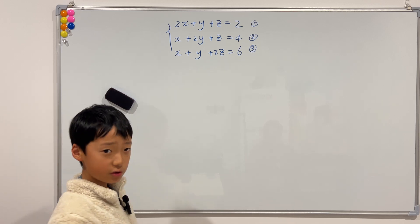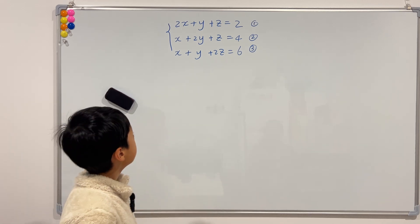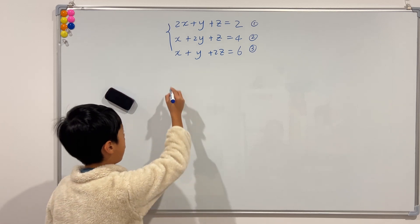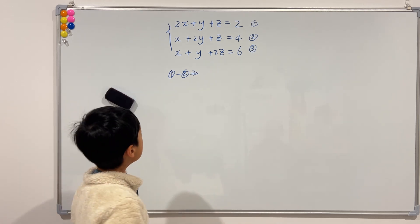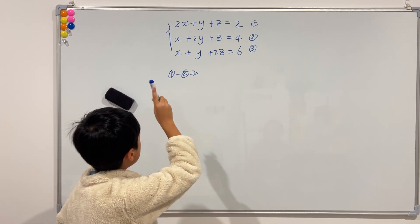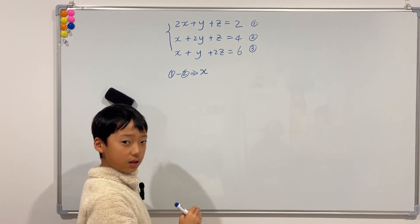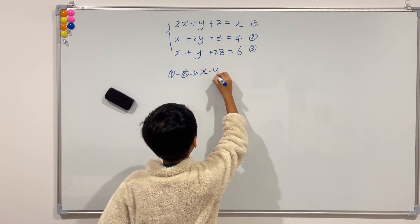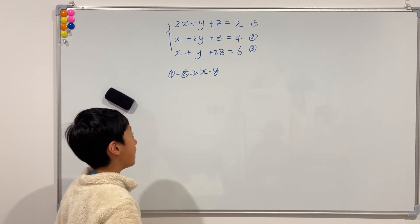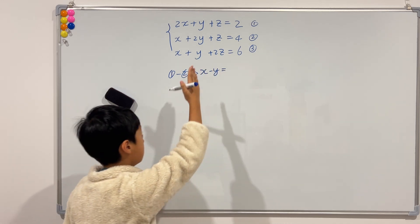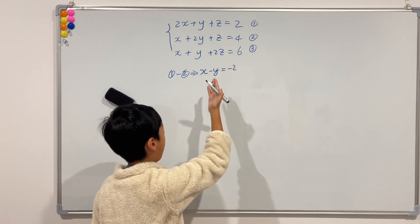Let's try and see how we cancel out z in equations 1 and 2. Why don't we just do equation 1 minus equation 2. What is 2x minus x? Of course, x. What is y minus 2y? Negative y. And z minus z is 0, so it's gone. This is equal to 2 minus 4, which is negative 2. I'll call this equation 4.